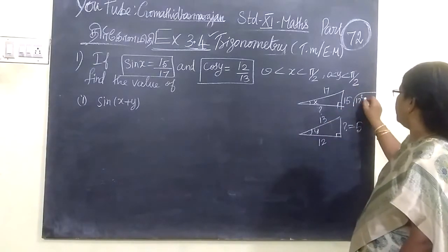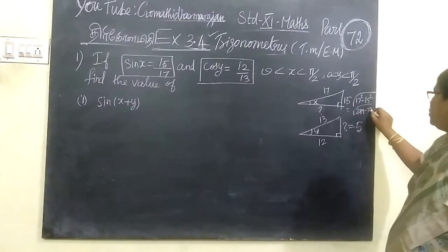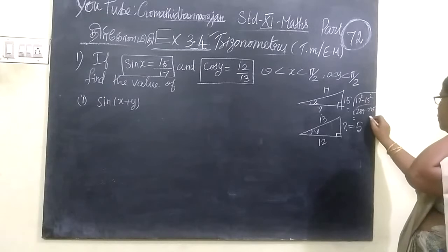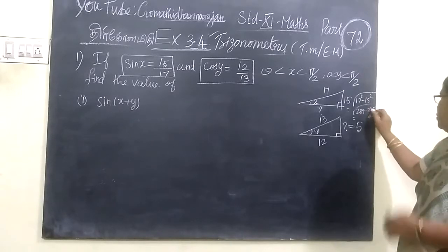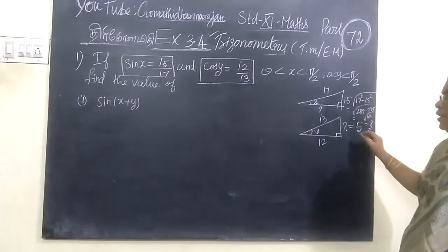17 squared minus 15 squared, so 289 minus 225, that means 89 minus 25 is 64, which is 8 squared. So 2 plus 54, this is nothing but 8.